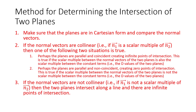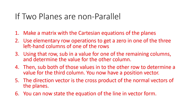It's also possible for the normal vectors to not be collinear, and then the two planes would intersect along a line with infinite points of intersection. So what to do if two planes are not parallel? You make a matrix with the Cartesian equations of the planes, and then use elementary row operations to get a zero in one of the three left-hand columns of one of the rows. It doesn't have to be in one of the three left-hand columns — that's just a default.